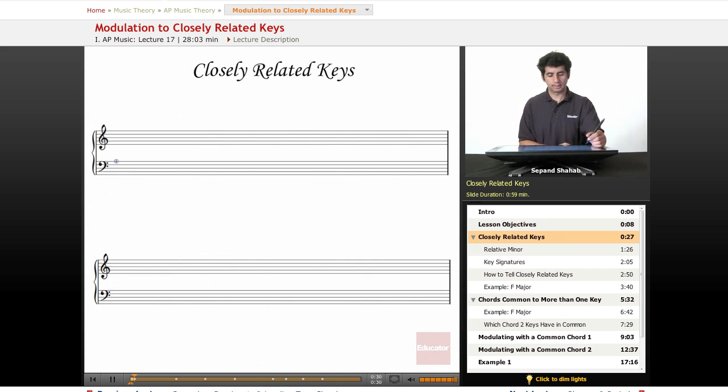So closely related keys. There's a few ways to think about this. Let's say we're starting with C major as our home key. So we can look at all the scale steps of C. We've got 1, 2, 3, 4, 5, 6, and 7. So the keys that are closely related to C are basically the major chords in the key. So that gives us 4 and 5.